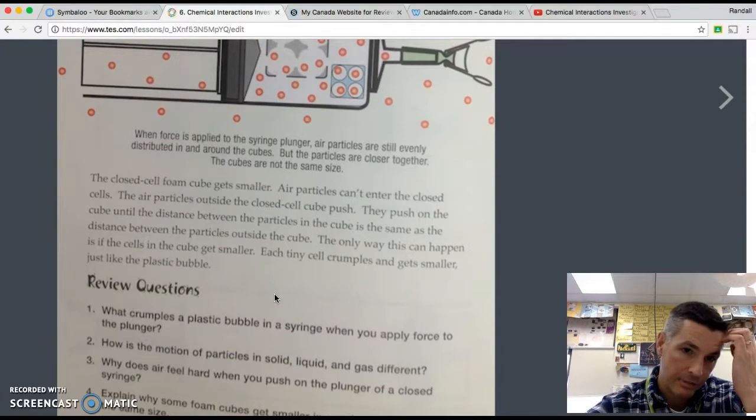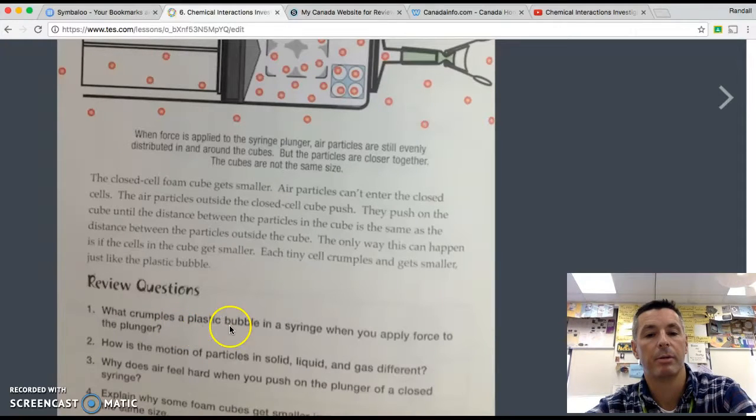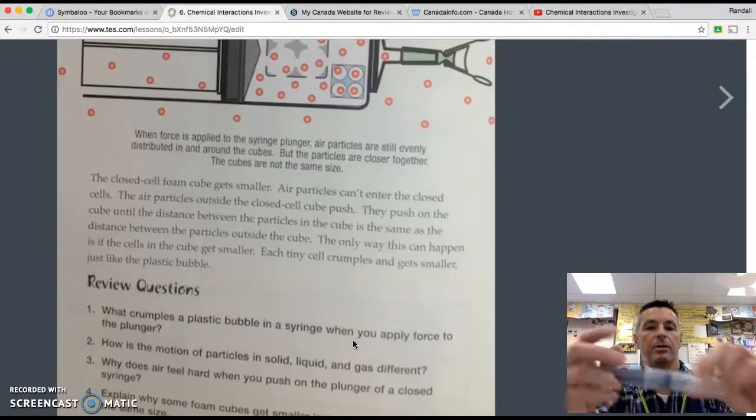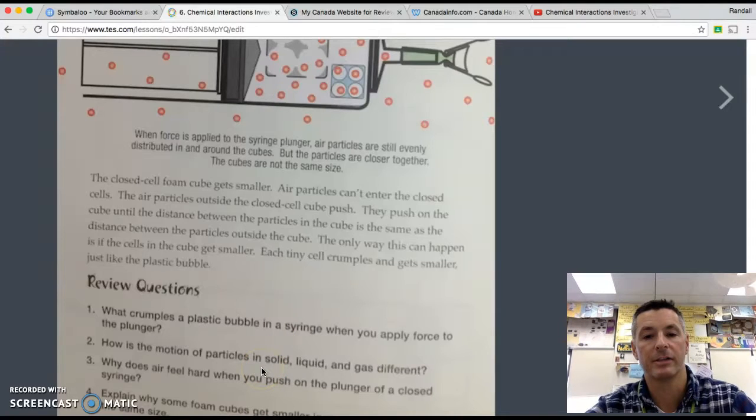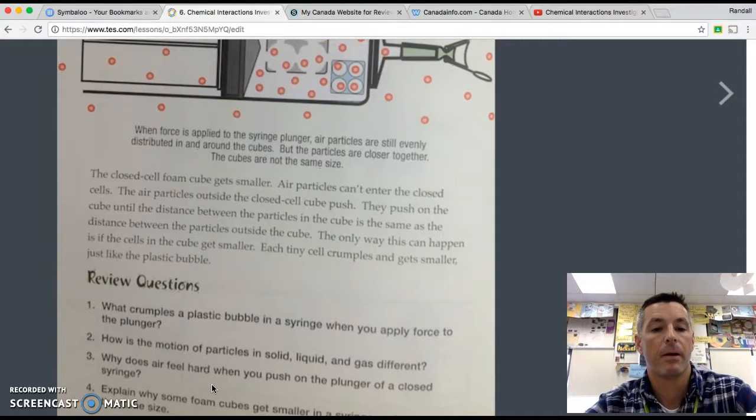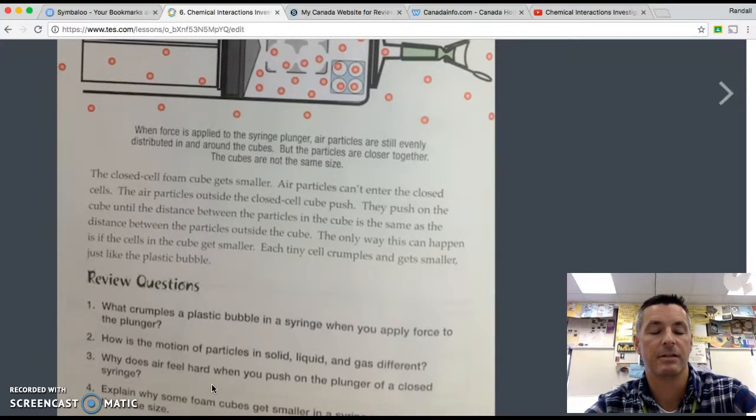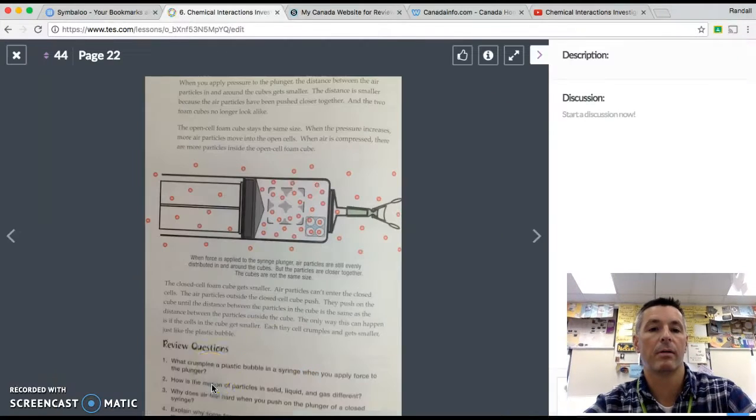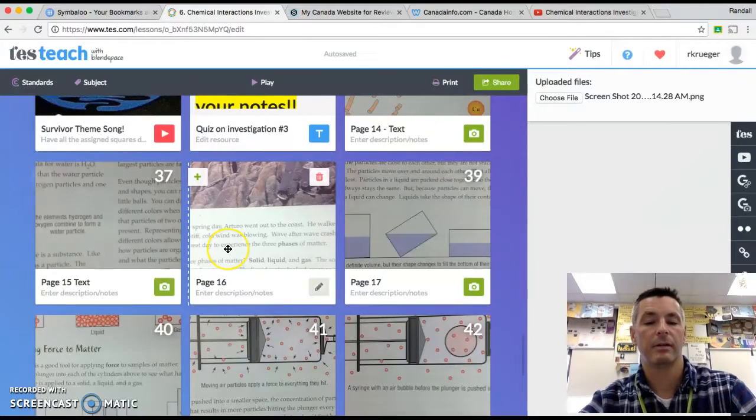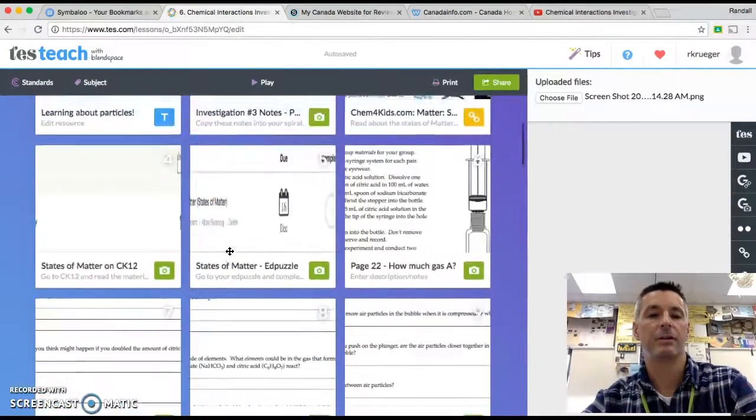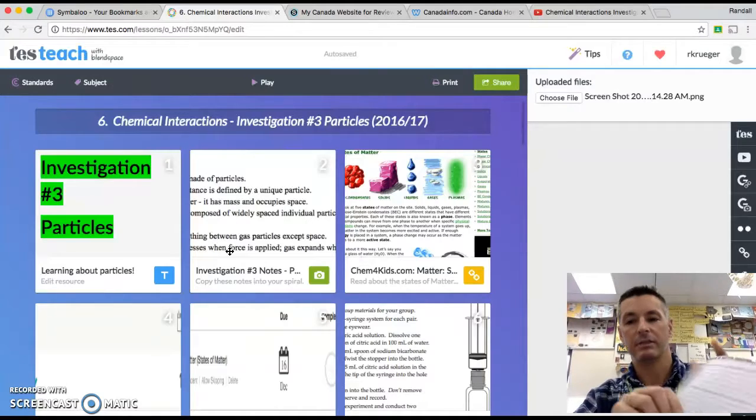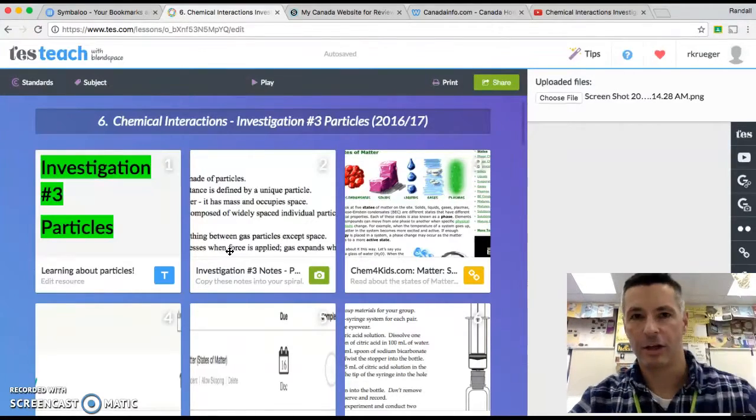So the questions you need to try and answer. Number one, what crumples a plastic bubble in a syringe when you apply force to the plunger? So the plastic bubble, what makes it crumple? How is the motion of the particles in a solid, liquid, and gas different? Number three, why does air feel hard when you push on the plunger? And number four, explain why some foam cubes get smaller in a syringe and some stay the same size. So we have listened and read along with pages 16 through 22. Now it's your turn to try and do your best job using complete sentences, filling the lines to answer those questions. Thank you for listening.